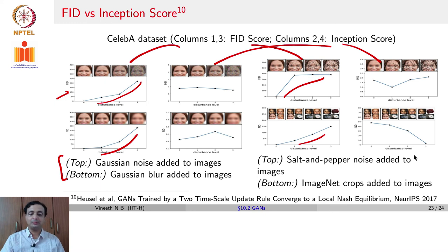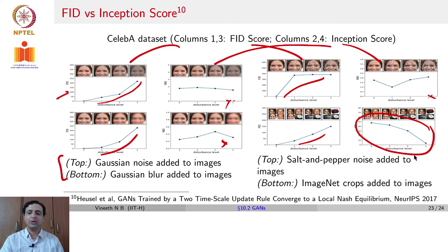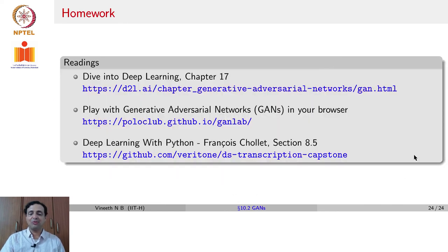However, for Gaussian noise, Gaussian blur, and salt-and-pepper noise, the Inception Score does not show much sensitivity — there is some variation but it is not as stark. This illustrates a limitation of Inception Score compared to FID. For further reading, the lecture references a deep dive into deep learning on GANs at a provided link, an interactive GAN demo at poloclub.github.io, and an implementation of GAN available for hands-on experimentation.